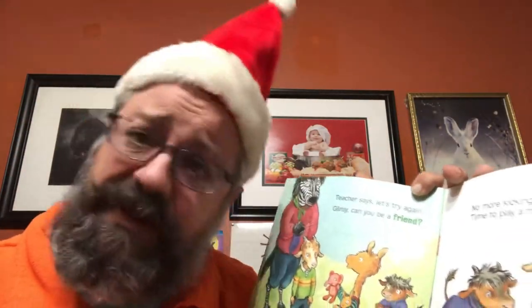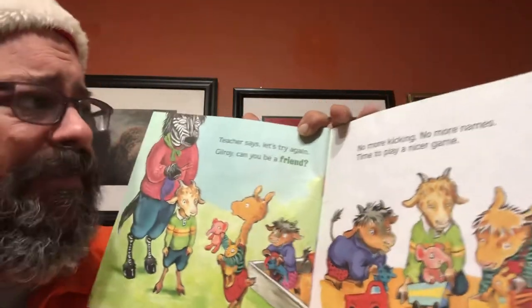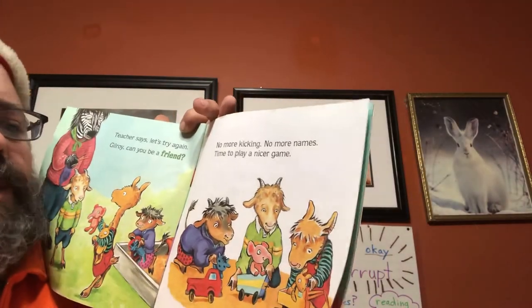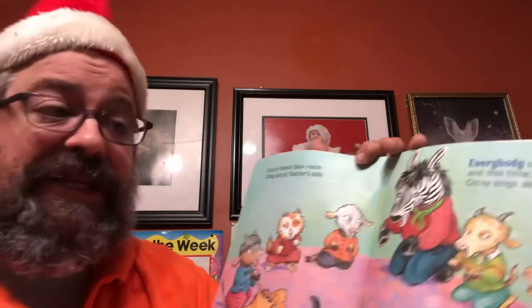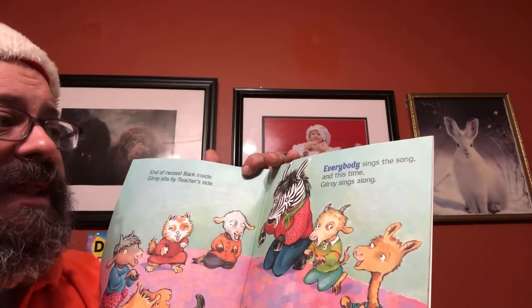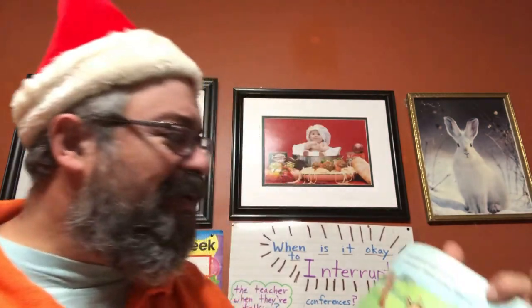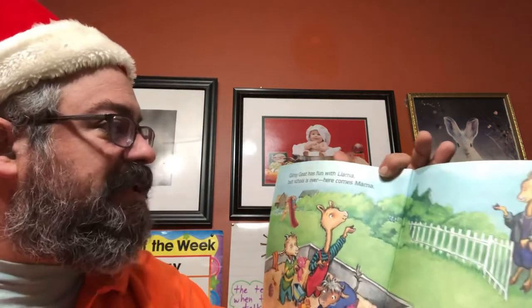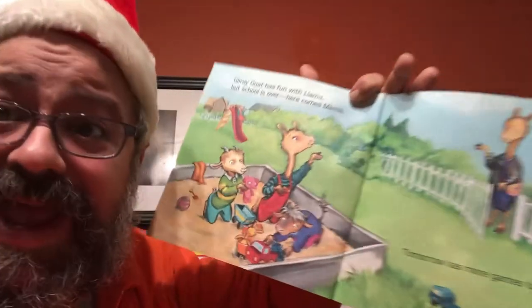'Gilroy, can you be a friend? No more kicking, no more names — time to play a nicer game. End of recess, back inside — Gilroy sits by teacher's side.' She's gonna keep a close eye on him. 'Everybody sings the song — and this time Gilroy sings along. Gilroy has fun with llama, but school is over and here comes mama. Tomorrow has more games to try.'